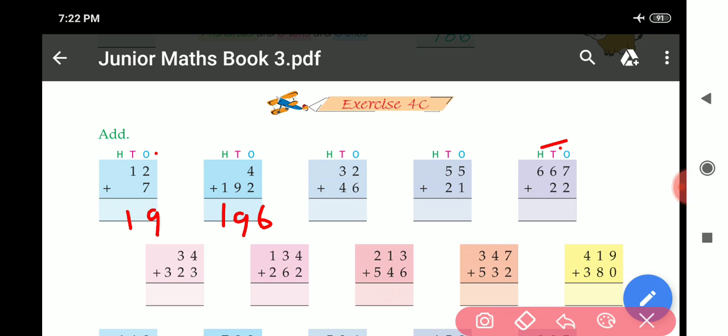Now come to this part. 7 plus 2, 9. 6 plus 2, 8 and 6 here. 6, 8, 9.